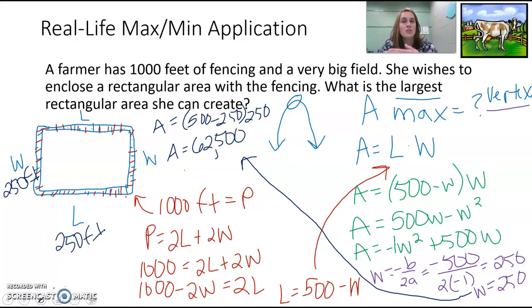But knowing that our two dimensions are feet and feet, then we know that our area is feet squared. So the maximum area that she can have for her rectangular pin is 62,500 feet squared, which if you notice, 250 by 250, it's actually a square.